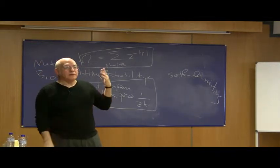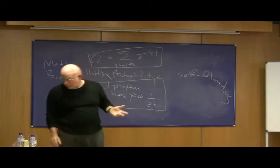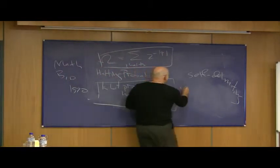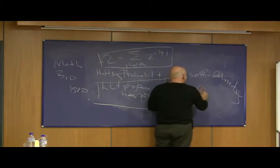So if all programs halted, the halting probability would be one. If no program halted, it would be zero. And it's actually in between, since some programs halt and some don't.